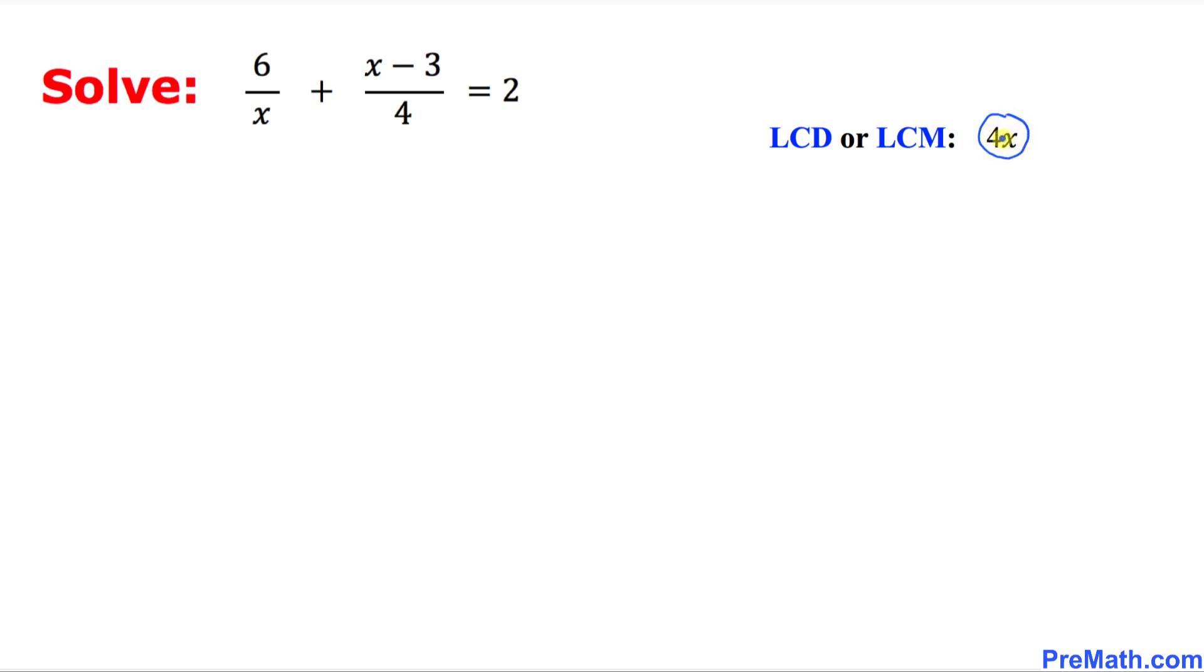Now in the next step, we are going to multiply each and every term in this equation by this least common denominator which is 4x. Let's go ahead and multiply across the board.